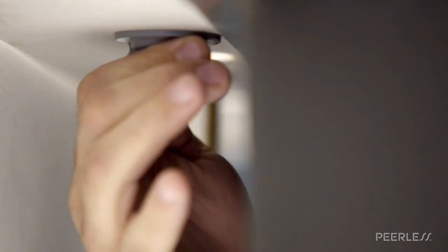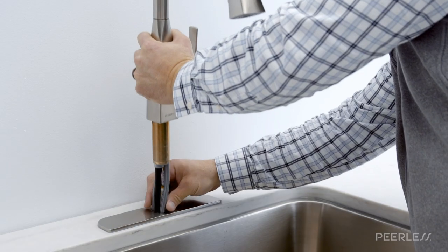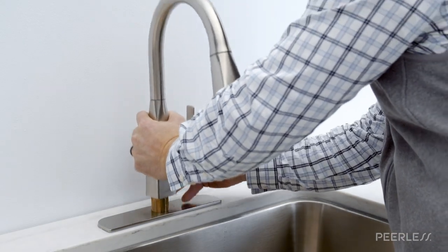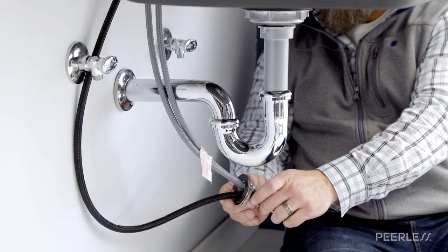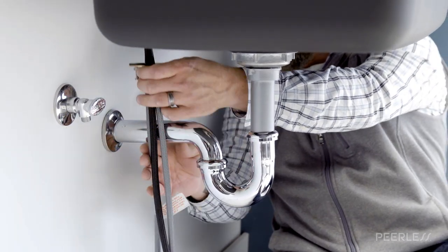Install the lock nuts onto the studs and tighten securely by hand. Insert your Peerless faucet through the escutcheon and mounting hole and secure the valve with the gasket, washer, and the threaded nut on the mounting shank.